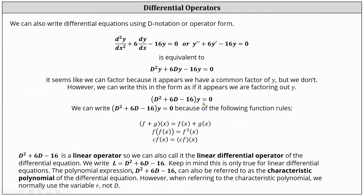The reason we can write the differential equation in this form is because of the following function properties: the sum of f and g of x equals f of x plus g of x; f of f of x equals f squared of x; and a constant c times f of x equals c times f of x. The important part to remember is that we don't have a product here — we have operators being applied to y. Capital D squared plus six D minus 16 is a linear operator, so we can call it a linear differential operator of the differential equation.